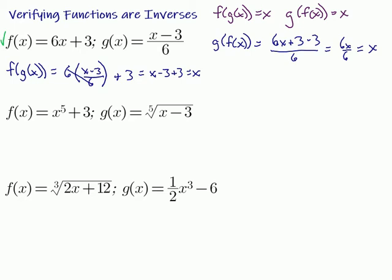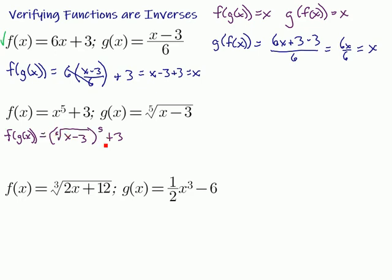Let's take a look at the next one. Same story — we're going to start with f of g of x. That means I'm going to put whatever g of x is equal to into the function called f for the x. So it's going to be the fifth root of (x minus 3), and that whole thing is to the fifth power, and then plus 3. The fifth root and the fifth power cancel, so we're left with x minus 3 plus 3, which gives us just x.